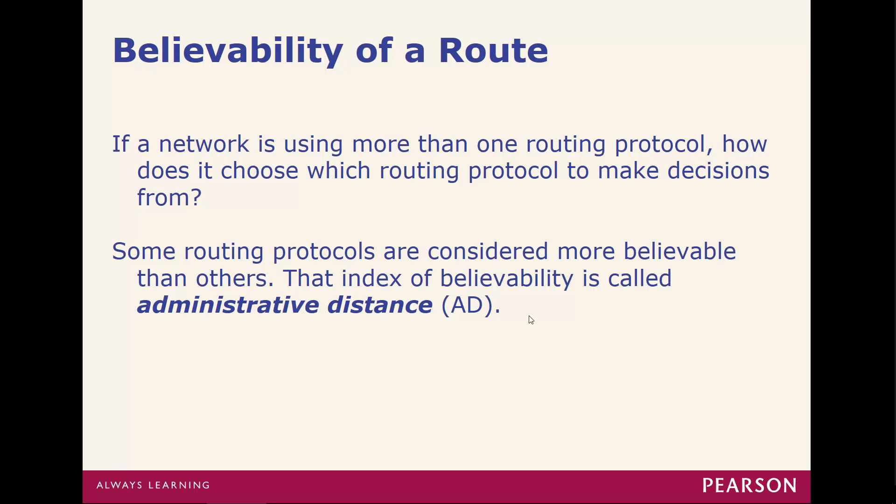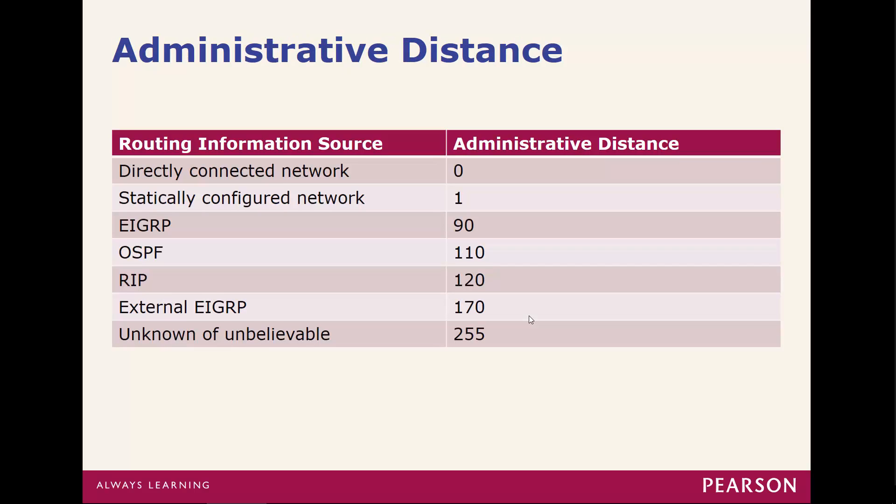The believability or trustworthiness of a route is called the administrative distance. We're going to believe or trust the network with the lowest administrative distance, because that tells us which is the most trustworthy. Default administrative distances: directly connected networks have an AD of 0, statically configured is 1, EIGRP is 90, OSPF is 110, RIP is 120, external EIGRP is 170, and unknown is 255. Whoever has the lowest AD is the one we trust.